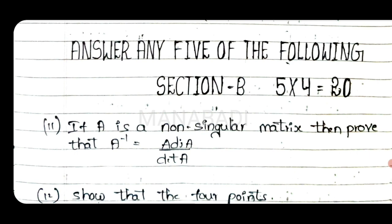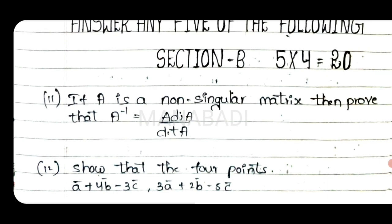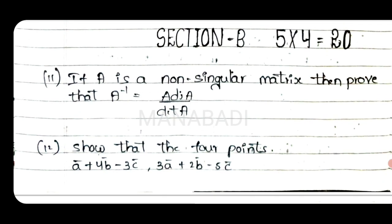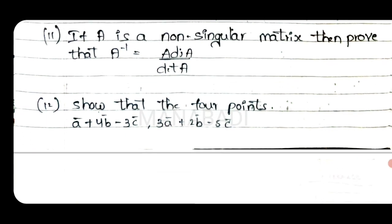Section B — answer any five of the following. One question is 4 marks. Eleventh question: If A is a non-singular matrix, prove that A inverse equals adjoint A divided by det A.